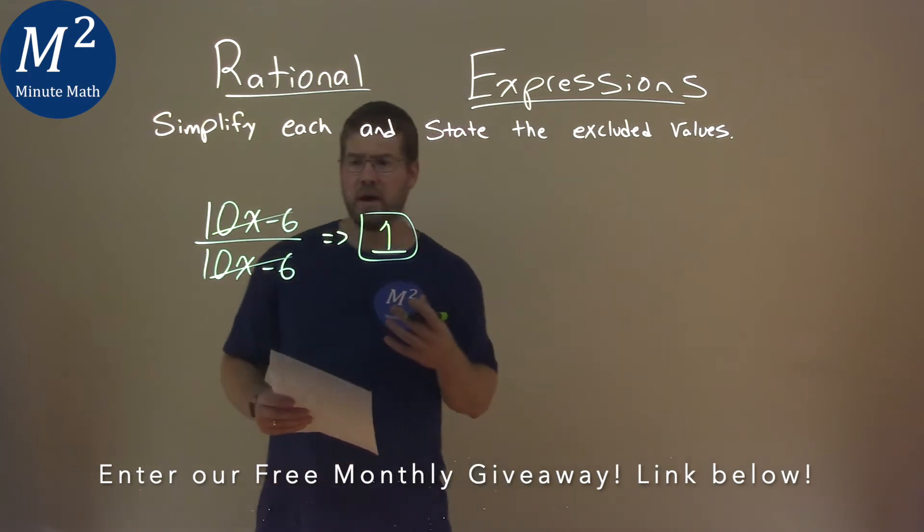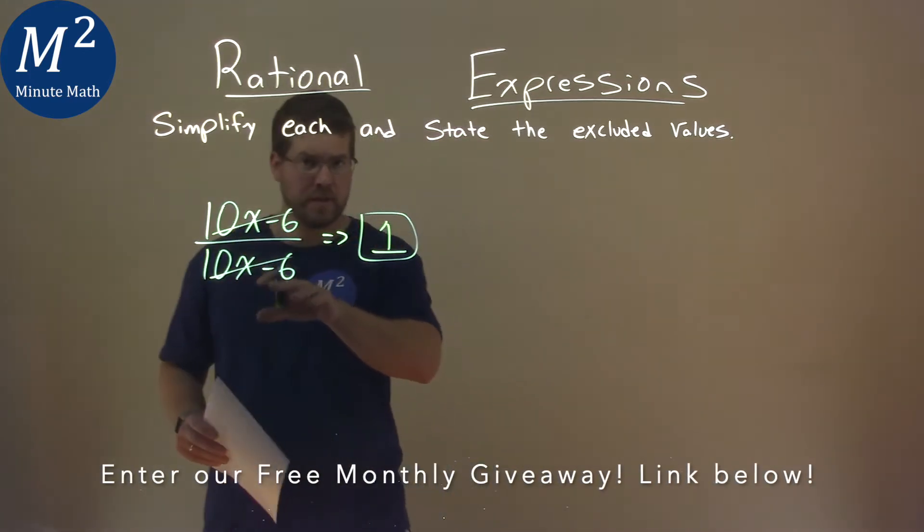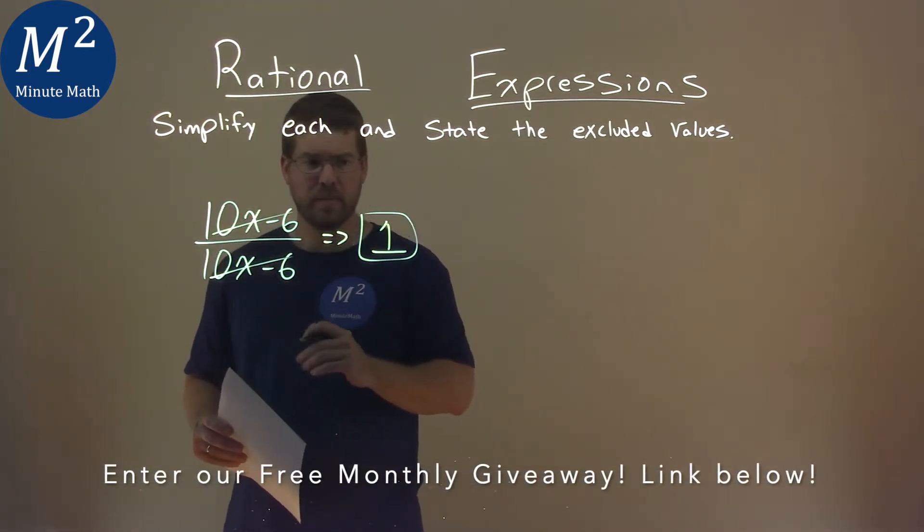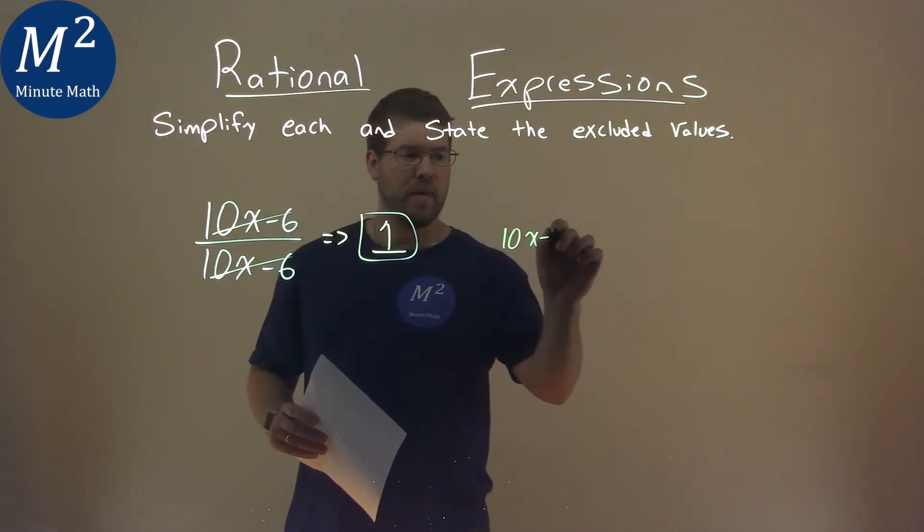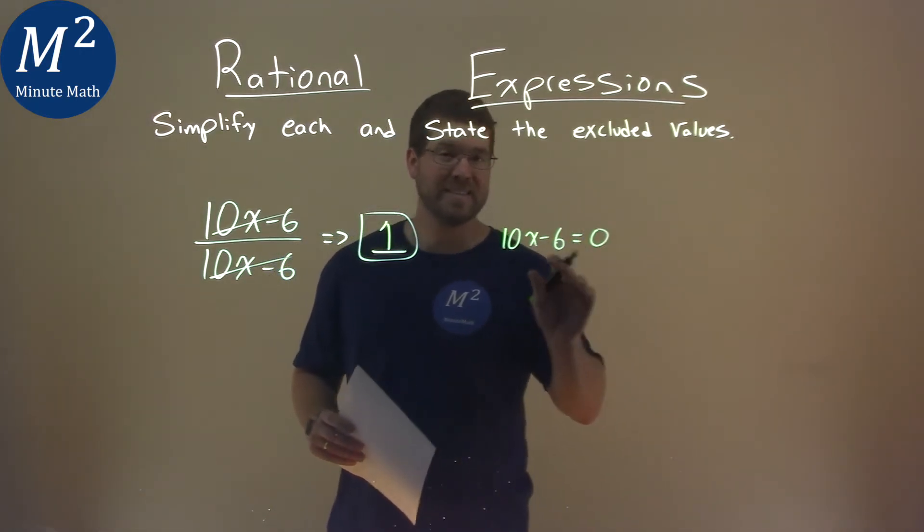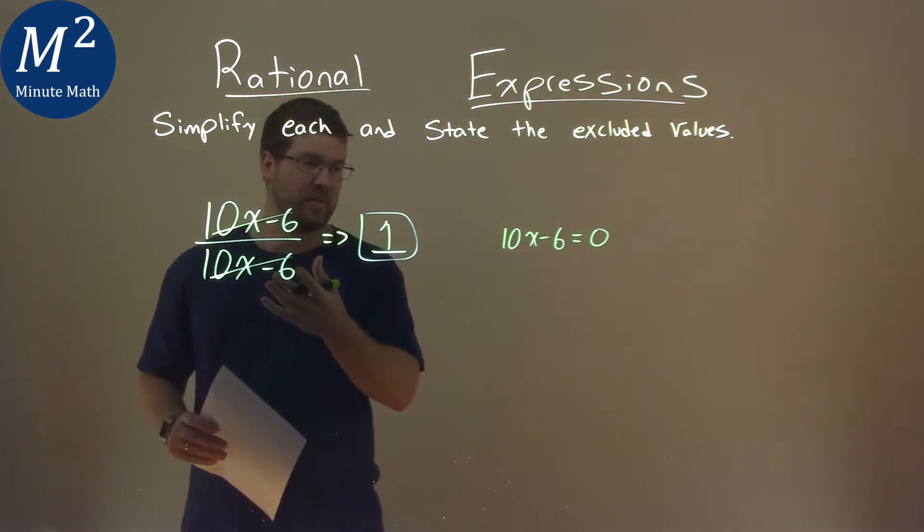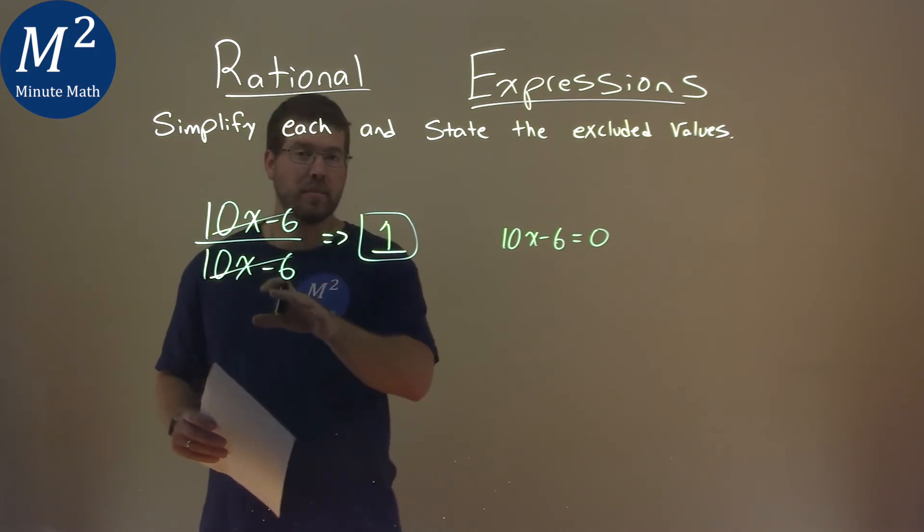But we still have to find our excluded values. So we take our original expression and we look at the denominator, 10x minus 6, and we're going to see when that is equal to 0. We can't divide by 0, so we're trying to find when our denominator is equal to 0.